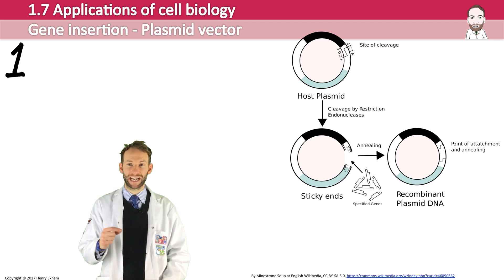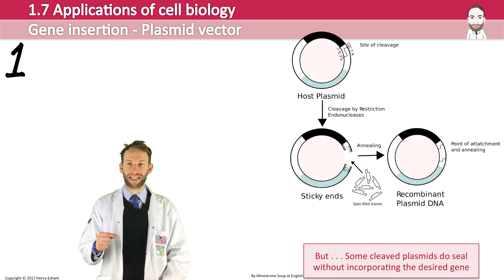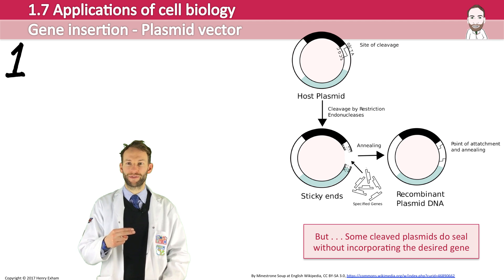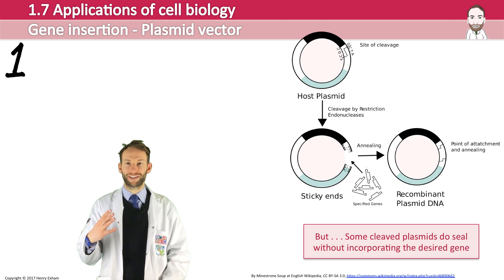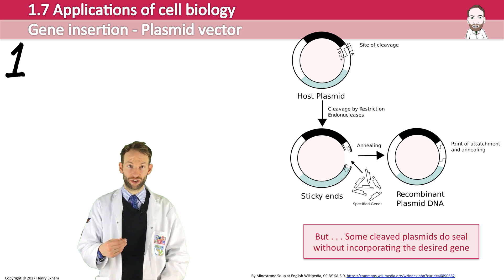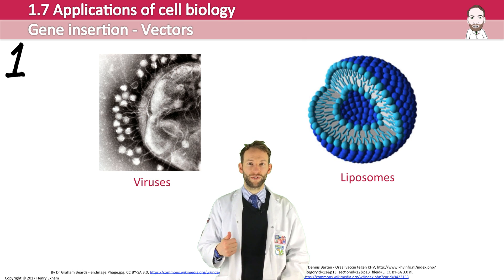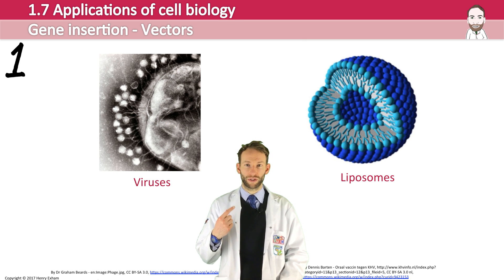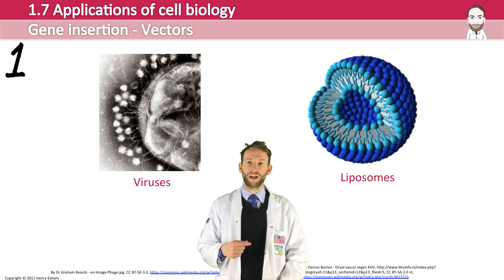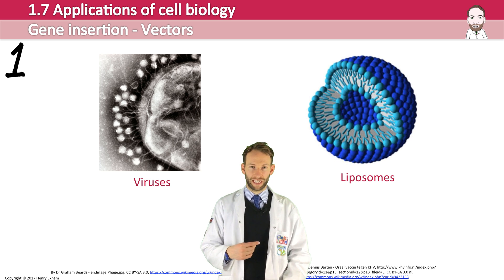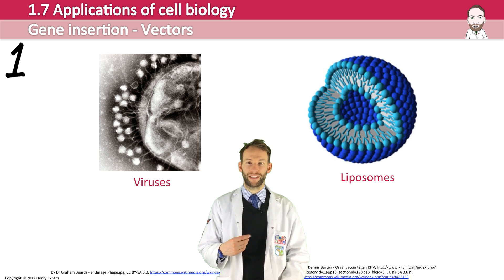We have to be careful here because some cleaved plasmids, when opened with restriction endonucleases, actually just seal up again without incorporating the desired genes — this doesn't happen 100% of the time. Plasmids are not the only type of vector; you can also use viruses or things called liposomes, which are discussed further in my video on gene therapy.